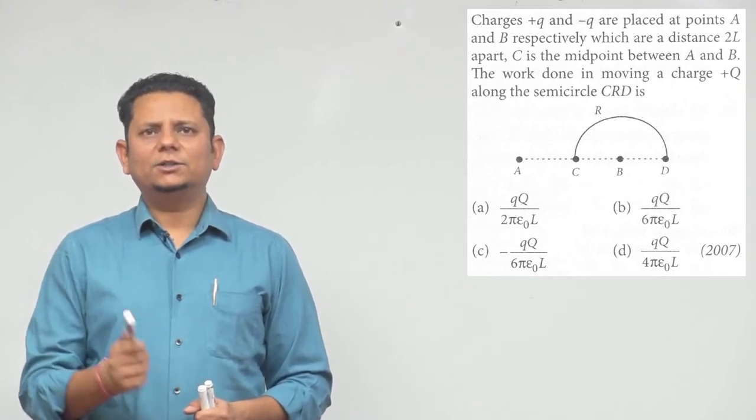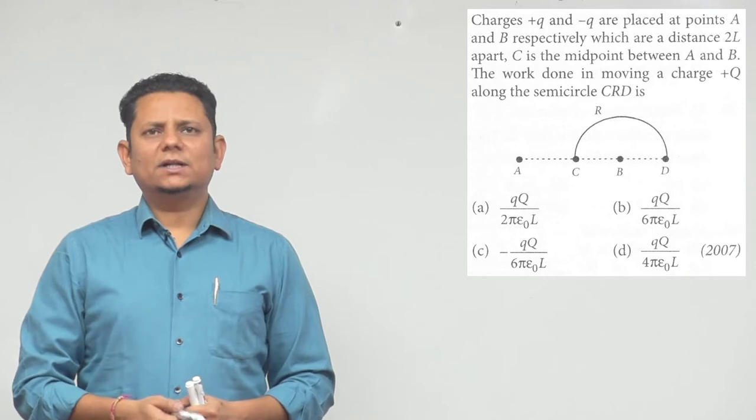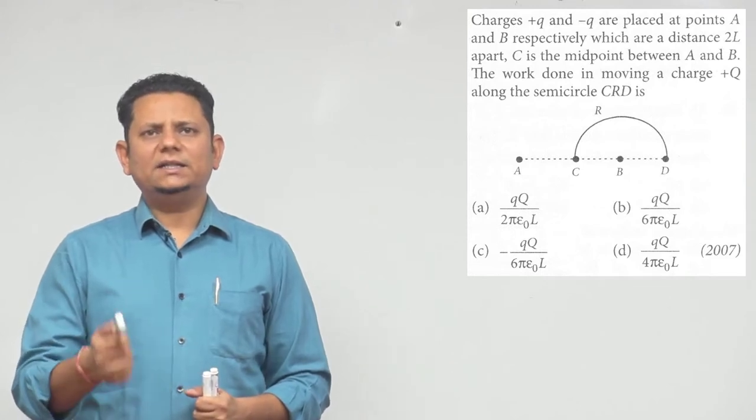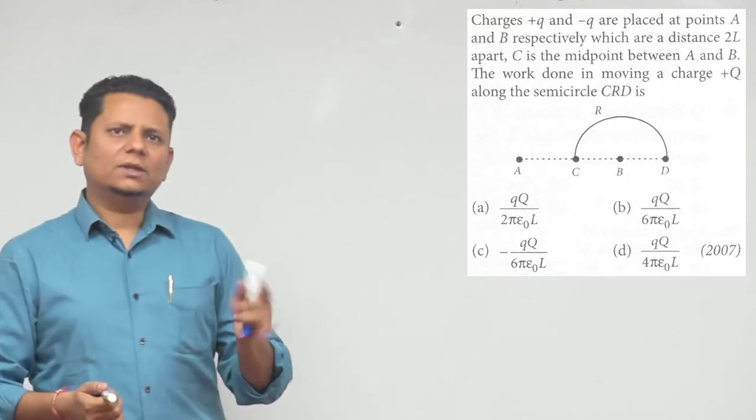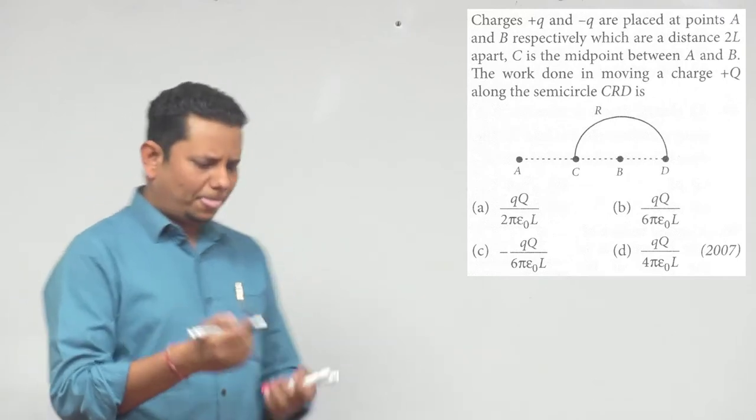We need to find the work done in moving a charge +Q along the semicircular path CRD. Or D we can assume here that the distance will be the same as the distance between B and C.